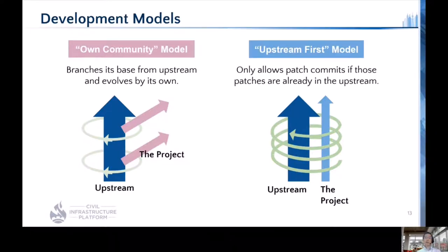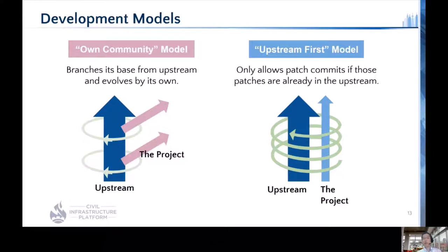The model on the right is the upstream-first model. The project allows patch commits only if those patches are already in the upstream. It may take time to introduce a desired patch — if the target patch is not in the upstream yet, it must be accepted by upstream first. But this model eliminates the risk of conflicts, and at the same time the project can share its outputs with the upstream.